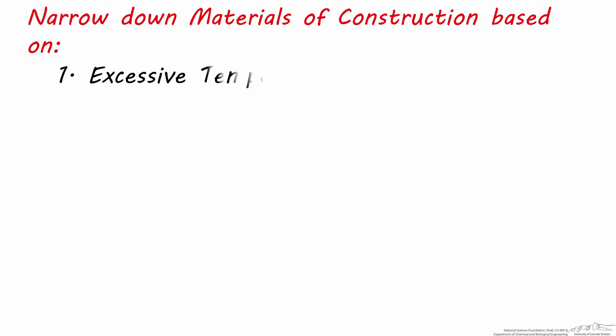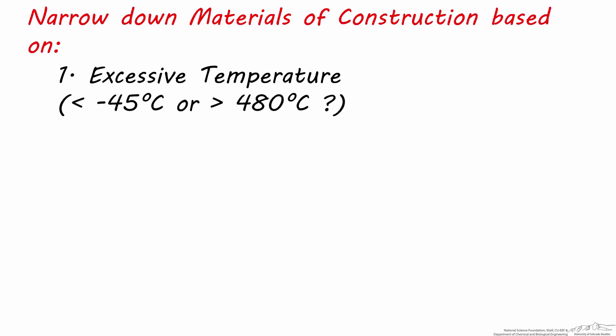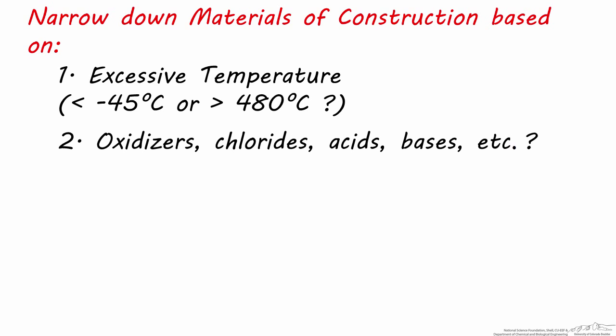When selecting an appropriate material, first narrow down the choice based on two factors. First, examine if the temperature of either stream going through the heat exchanger is excessively high or low, because these conditions require special materials. Second, look for oxidizers, chlorides, acids, bases, or any other reactive chemicals in the streams going through the heat exchanger. These will also require special materials to avoid reactivity with the heat exchanger.